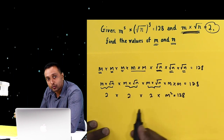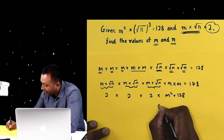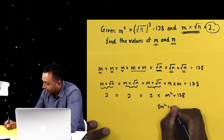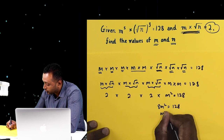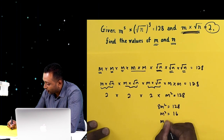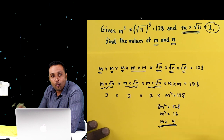So when I solve this, I get 8m squared equals 128, where m squared equals 16, and therefore the value of m is 4.